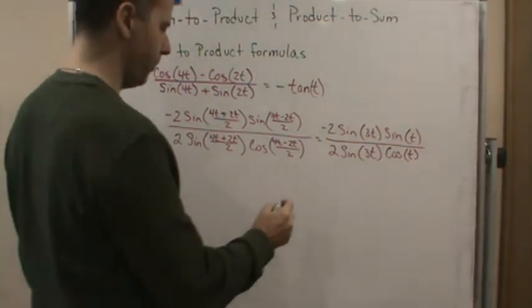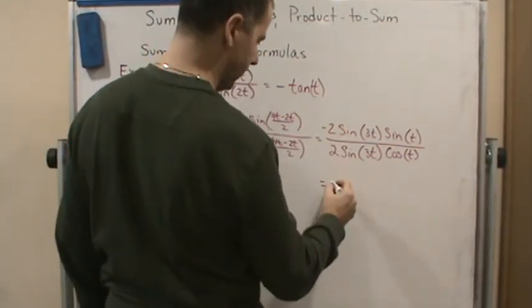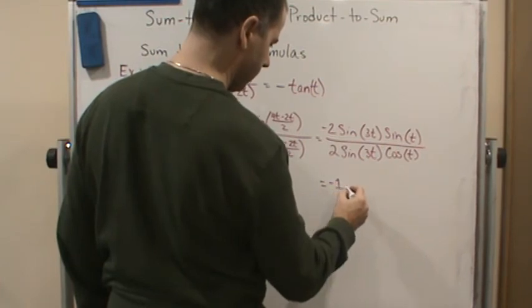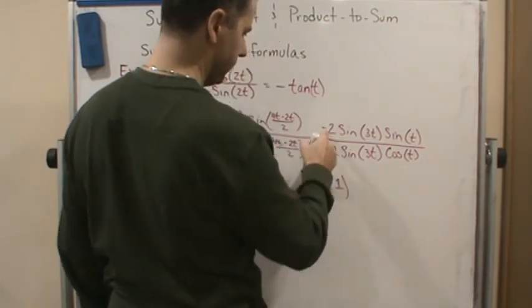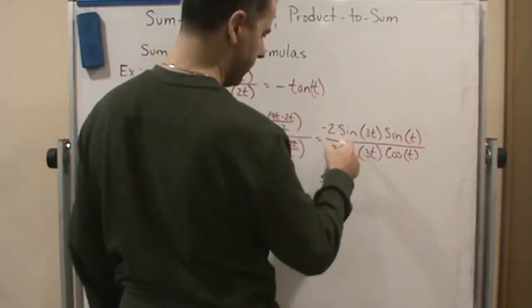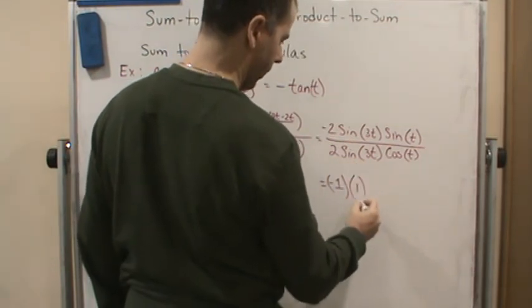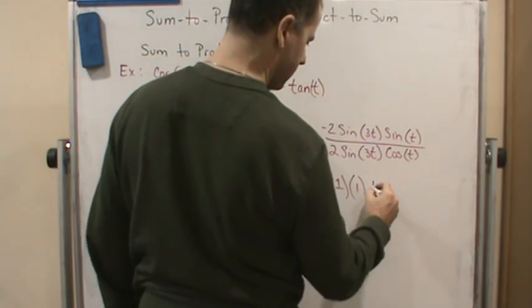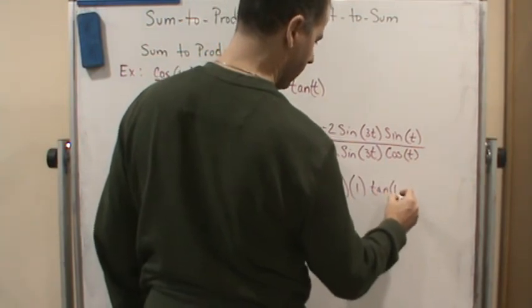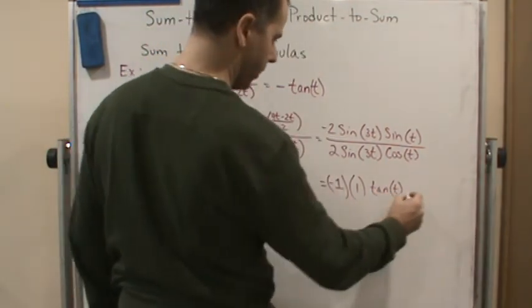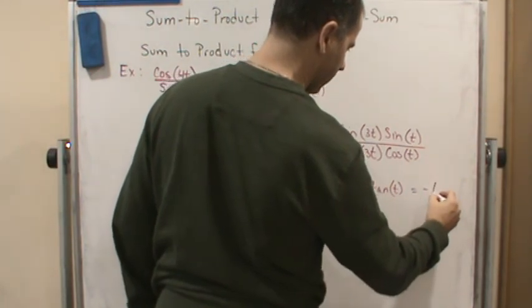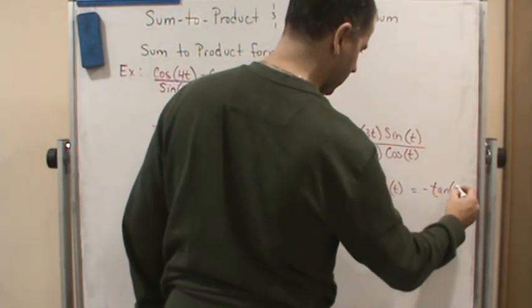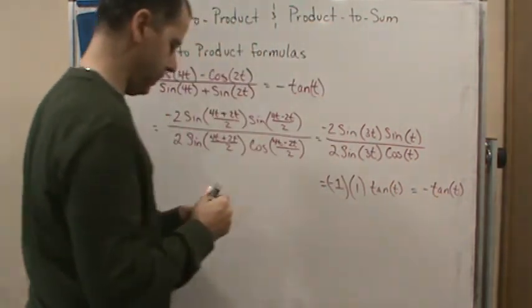And so I get my results. So this is going to be negative 1, right? Negative 2 divided by 2. This is going to give me positive 1. You don't have to write all this out, I'm just showing you. And then this is going to be tangent t. And so of course that gives me a negative tangent t. And I'm done.